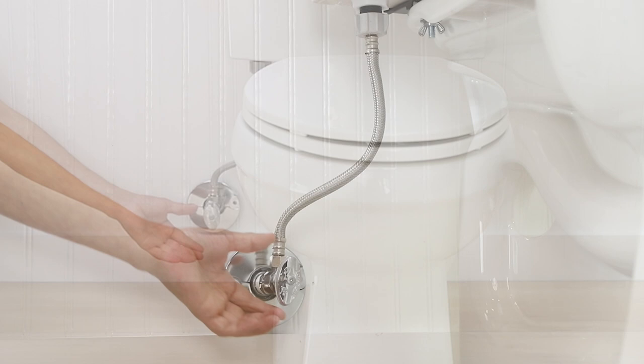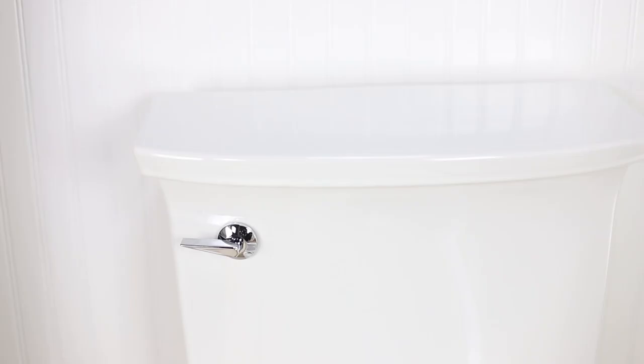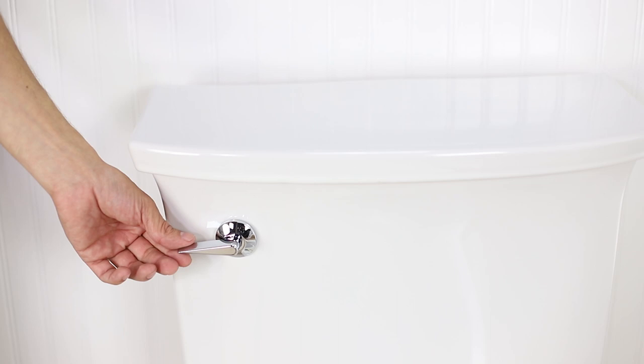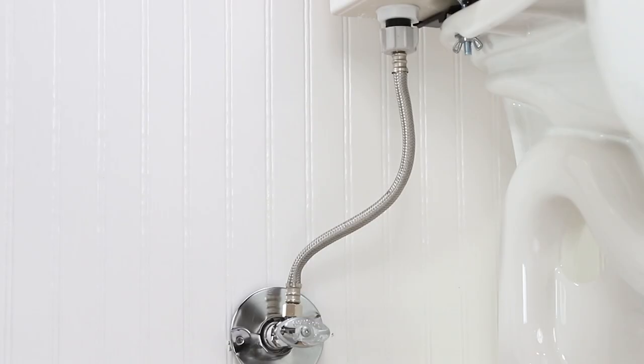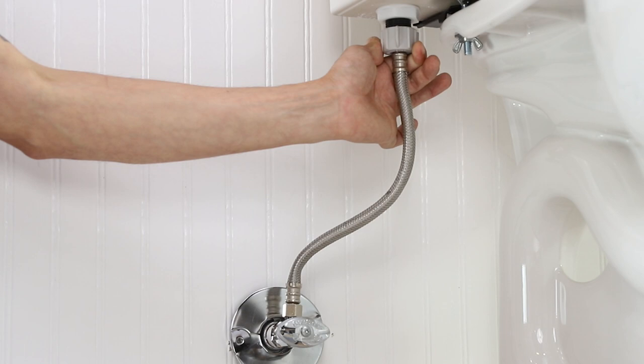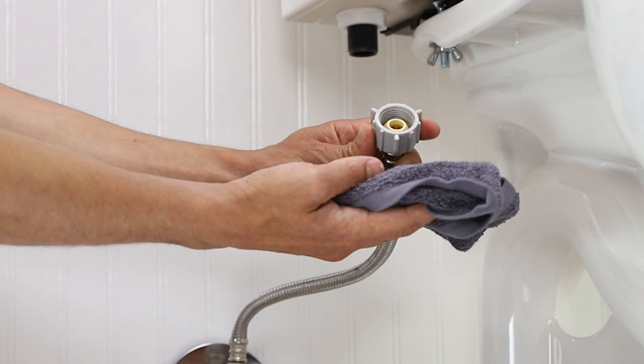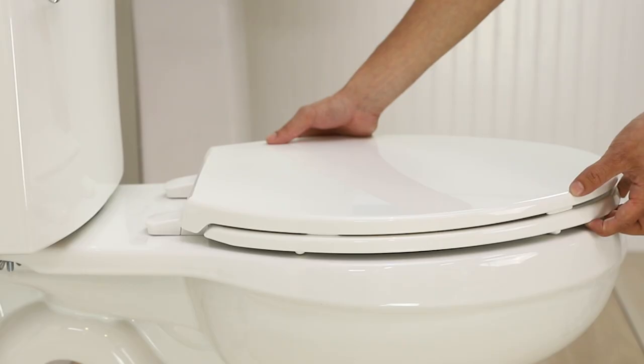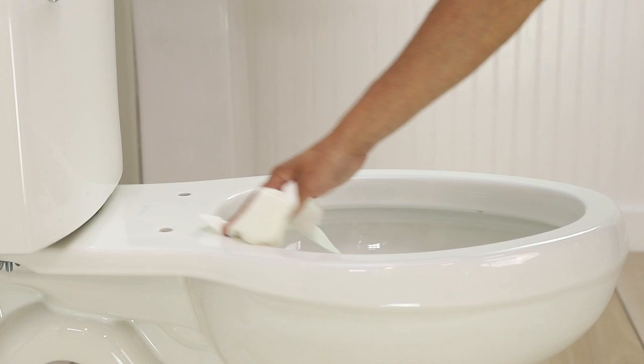Turn off the toilet water supply at the shutoff valve at the wall. Flush your toilet and hold down the flush handle until the water is fully drained out of the tank. Unscrew the flexible water supply line from your fill valve under the toilet tank. You may want a small bucket or towel handy to catch any residual water.